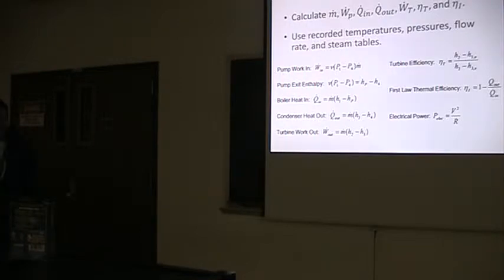The turbine efficiency comes from comparing the actual adiabatic work that's produced in the turbine with the ideal isentropic work. The first law thermal efficiency compares the heat out of the condenser to the boiler.